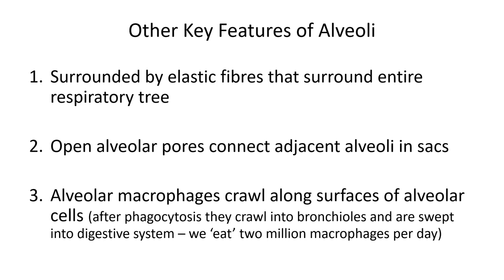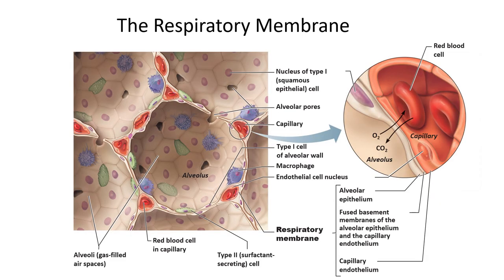The membrane between the alveoli and the capillaries is known as the respiratory membrane. It's two cells thick, consisting of a thin squamous layer lining the capillary and a thin squamous layer lining the alveolus. Oxygen and carbon dioxide can move across this two-layered membrane very readily. The capillaries are extremely thin-walled, traveling between alveoli, and are just big enough for individual red blood cells to pass through.